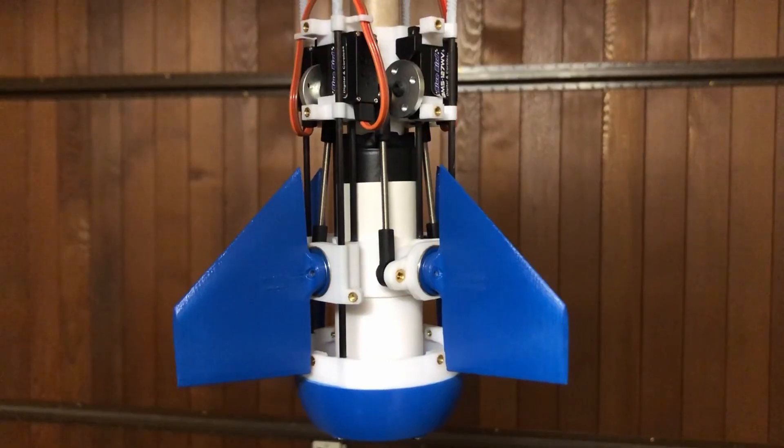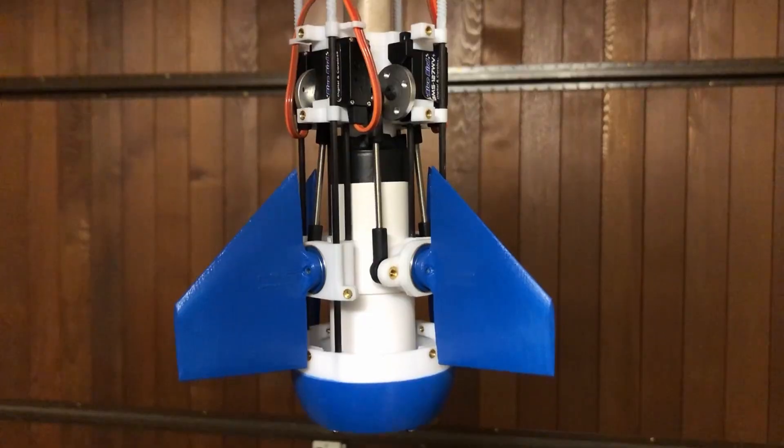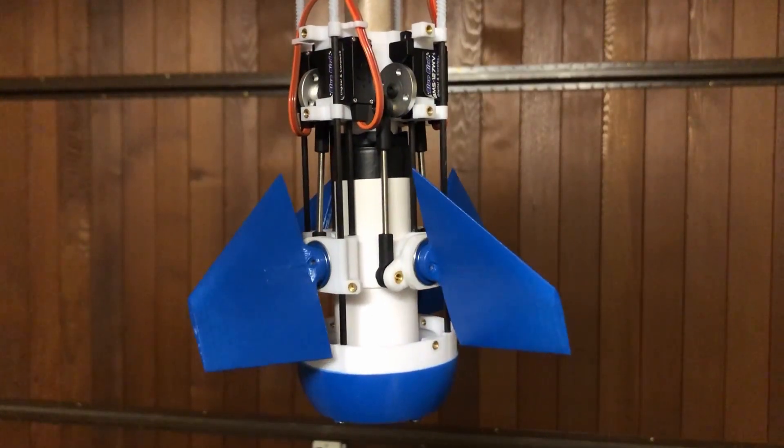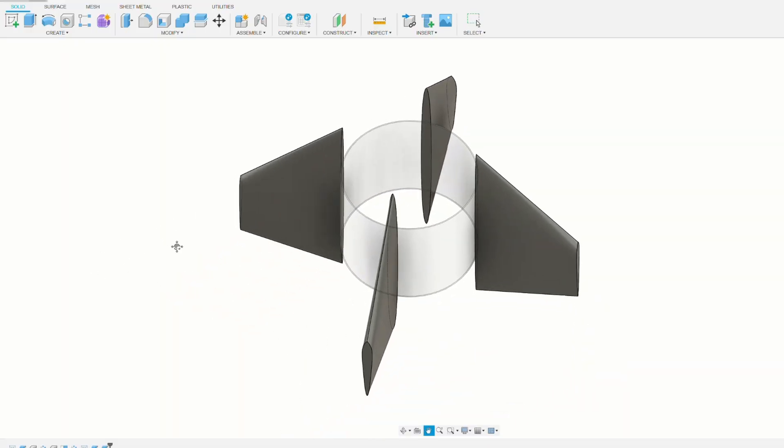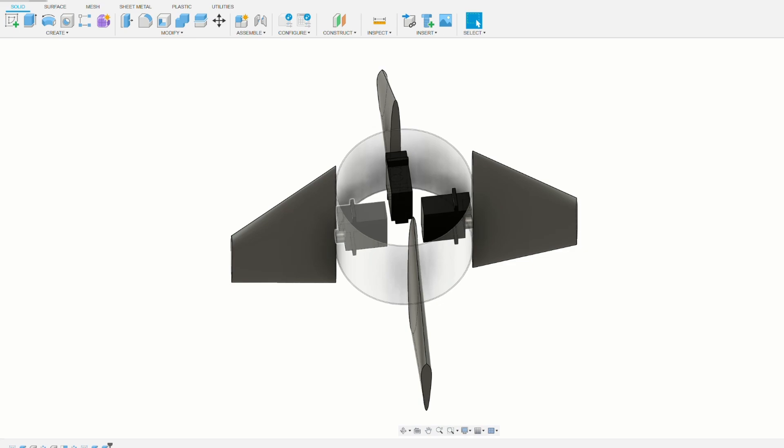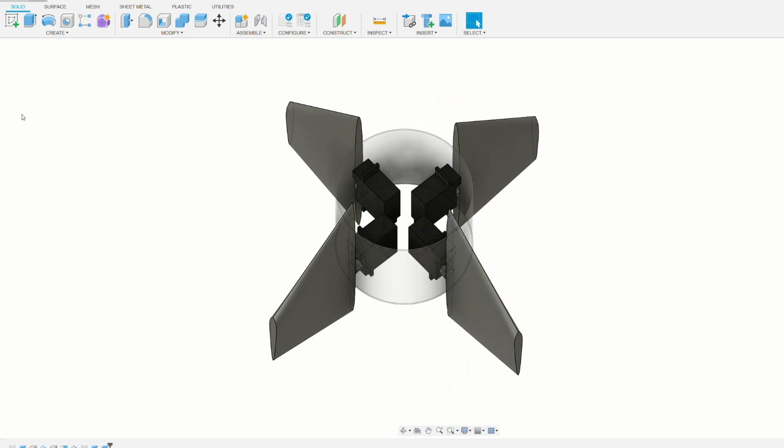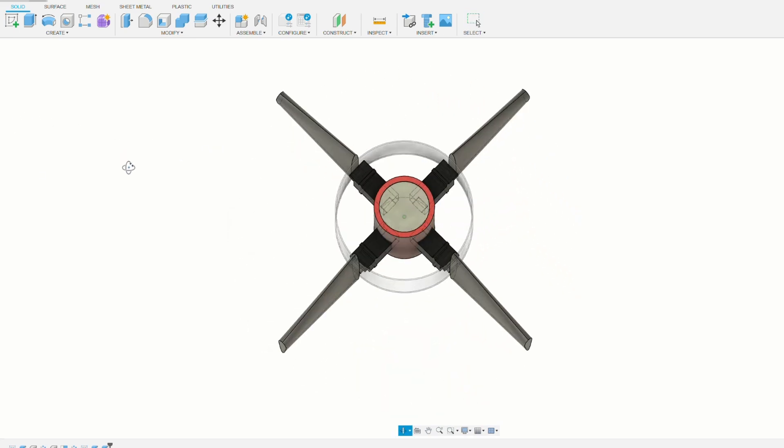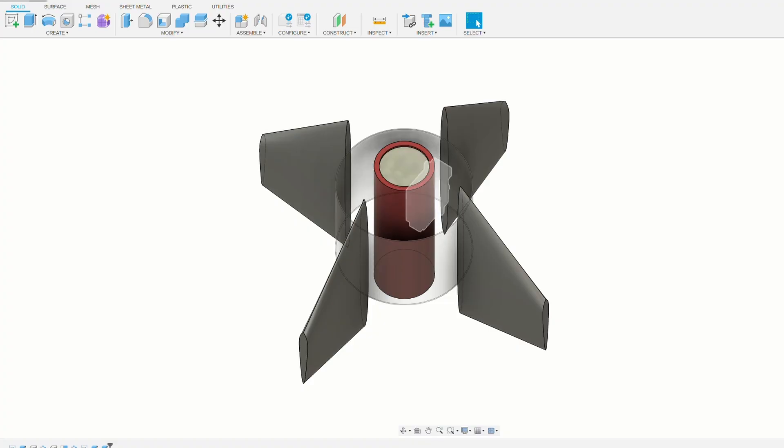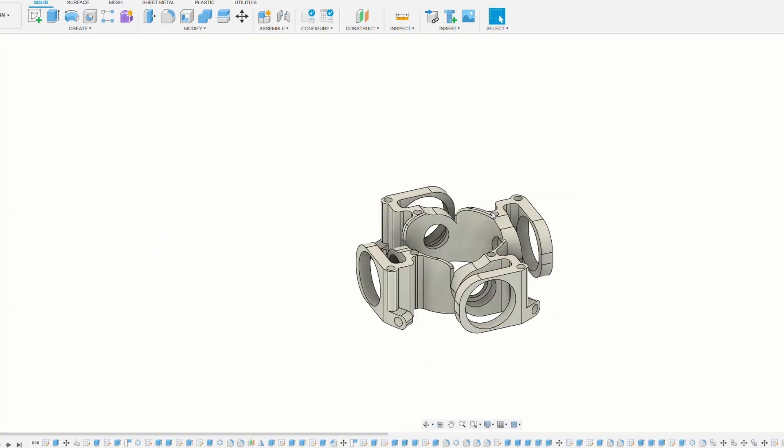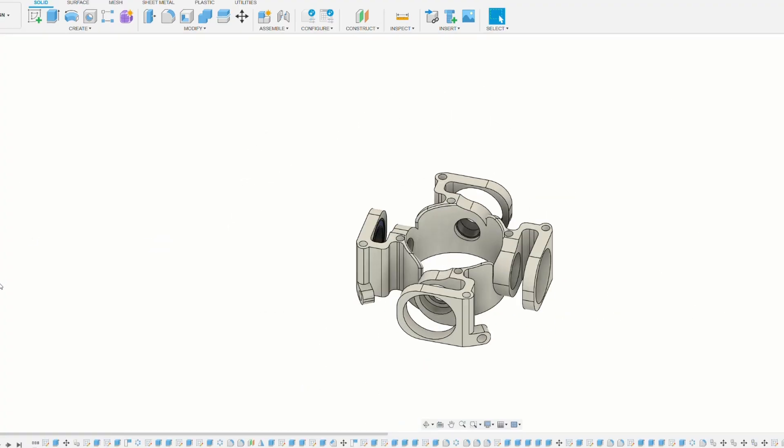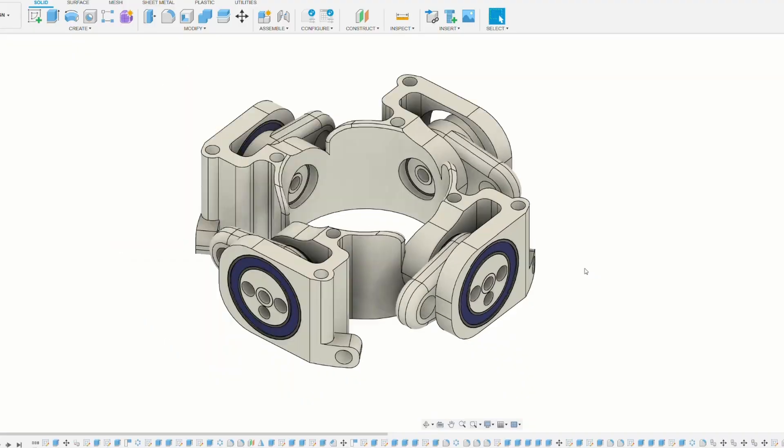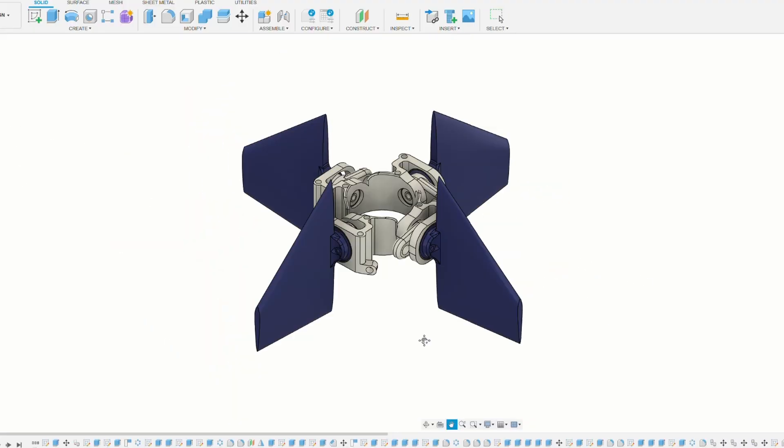I began designing an ideally precise and fast fin actuation system that could fit within the 66mm airframe. The fins cannot be directly driven off servo motors, because guess what's also in the aft of a rocket? A rocket motor. In this case, a 29mm one, which doesn't leave nearly enough room for four servos. I decided to move the servos above the rocket motor's footprint and then connect the fins via linkages.